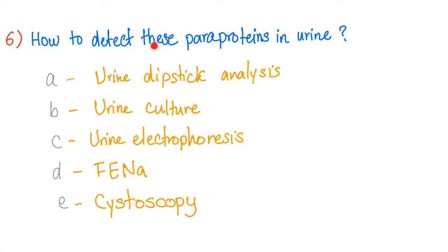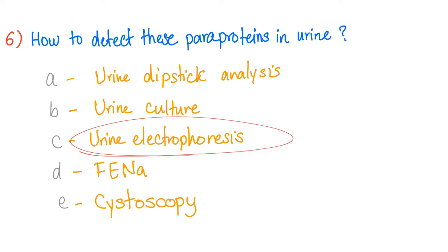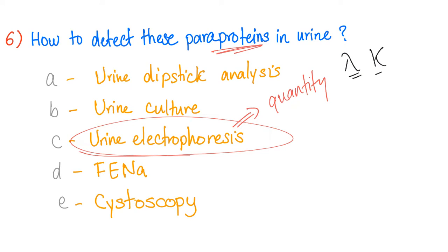Number six: How to detect these paraproteins in urine? By urine dipstick analysis, urine culture, urine electrophoresis, fractional excretion of sodium, or cystoscopy? The answer is urine electrophoresis. But pay attention — urine electrophoresis will only tell you the quantity of those Bence-Jones proteins. It will not tell you which one it is — whether it's the lambda or kappa light chain. We have no idea using urine electrophoresis by itself.